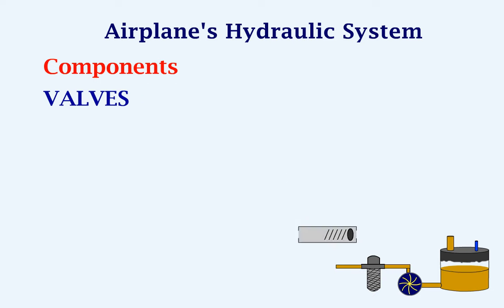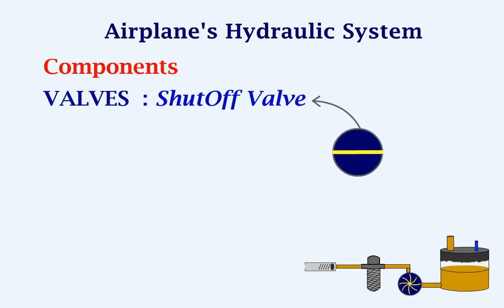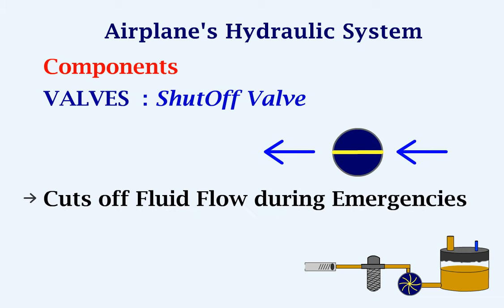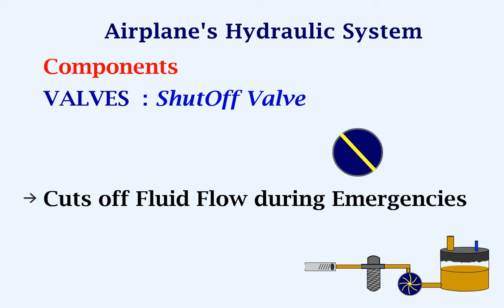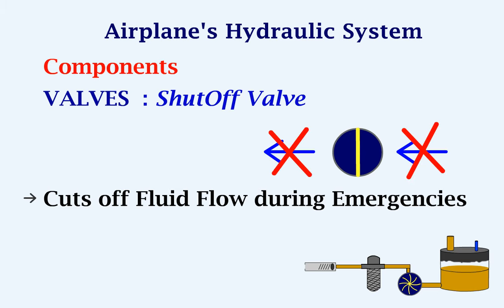Next, we will look at the shut off valve. This valve cuts off the hydraulic fluid from the system during emergencies such as leak, fire, or a pump fault. When this valve closes, it prevents the fluid from entering or exiting the valve.